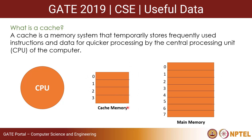Since cache memory is smaller in size, not all main memory blocks can be placed in the cache. Which main memory block to place is decided by cache mapping. When a main memory block needs to be mapped to the cache and that block is currently in use, cache replacement algorithms are used to replace a block in the cache when a miss occurs and the cache is occupied.